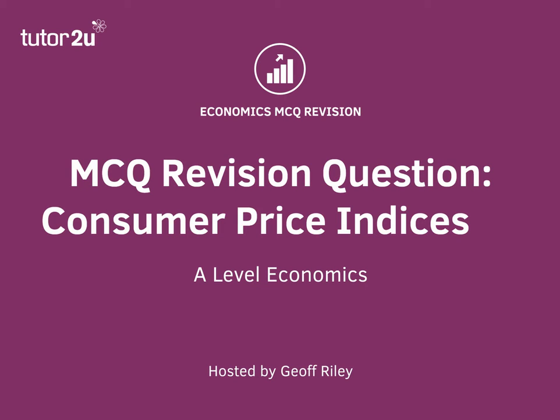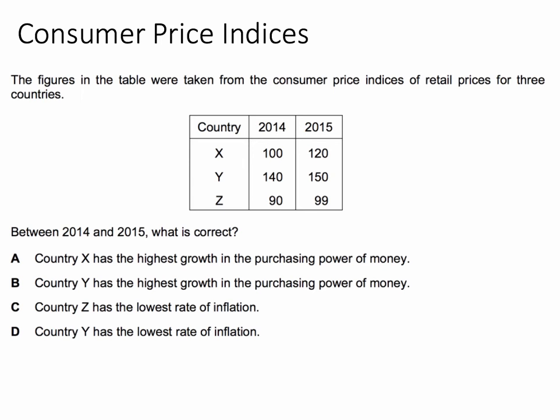Welcome back to another in our series of multiple choice revision questions. We take a particular question on a particular topic, you can have a go, and then we'll come back with the right answer and an explanation. This time it's on consumer price indices — the data used to calculate inflation. The figures in the table were taken from CPI data for three countries X, Y, and Z, covering 2014 and 2015. Press pause, have a go, and I'll be back with the correct answer.